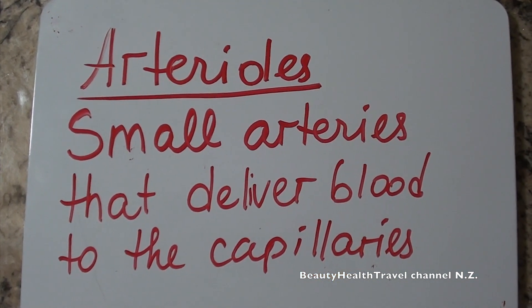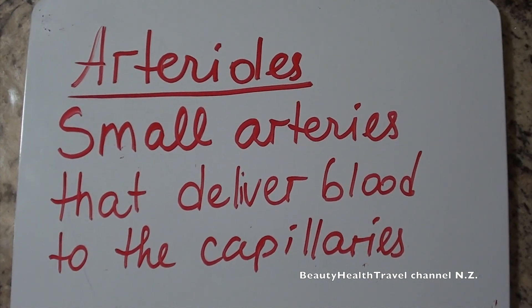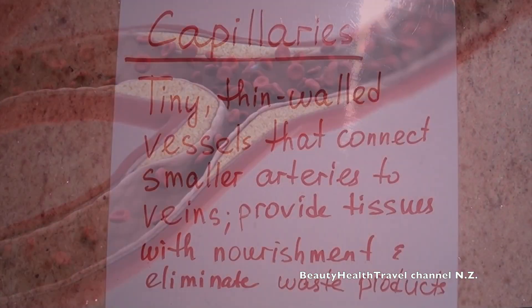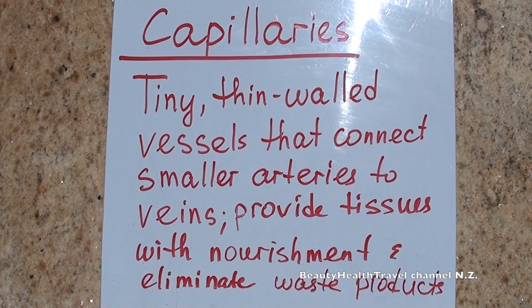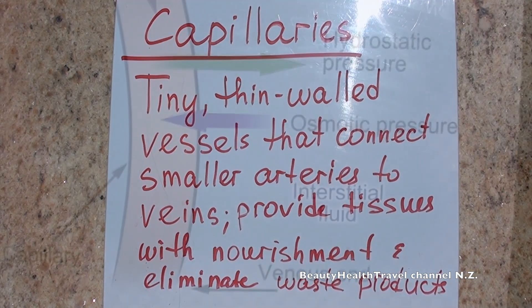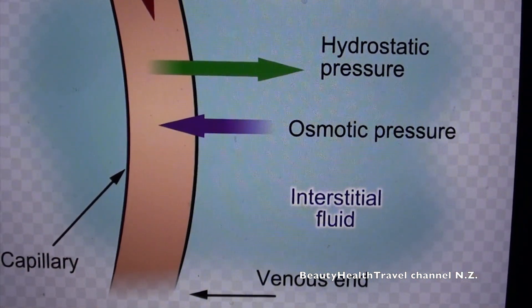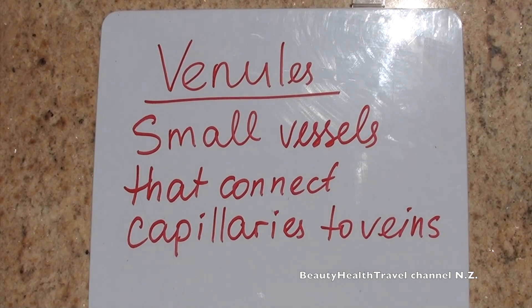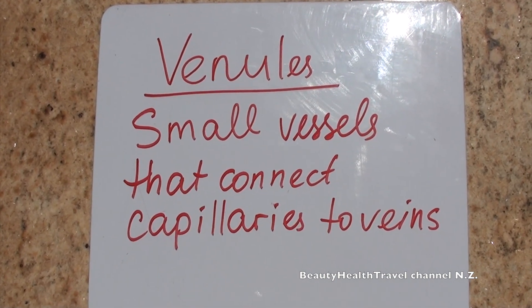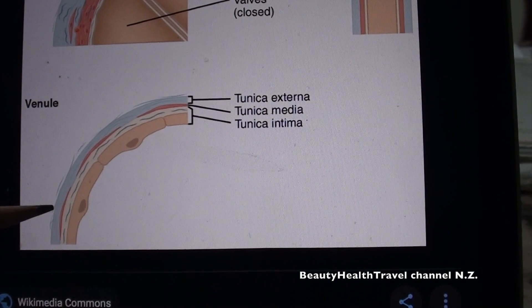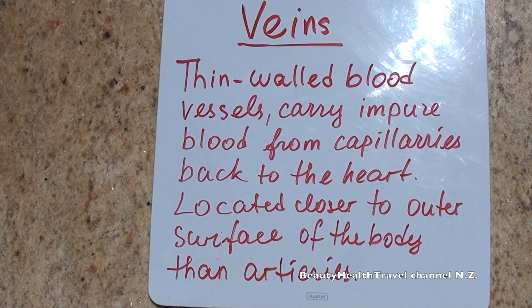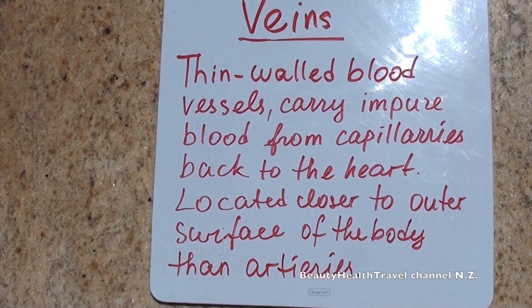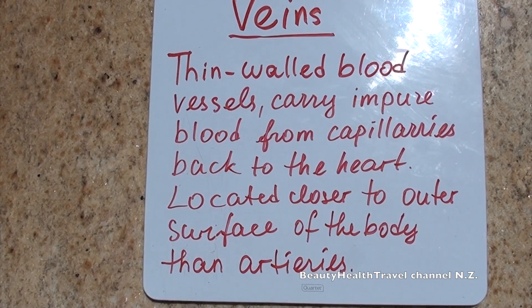Arterioles are small arteries that carry blood to the capillaries. Venules are small vessels that connect capillaries to veins. Veins are thin-walled blood vessels that carry impure blood from capillaries back to the heart, located closer to the outer surface of the body than arteries.